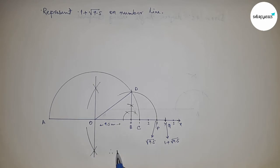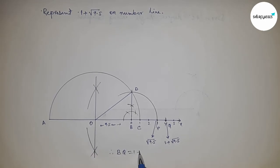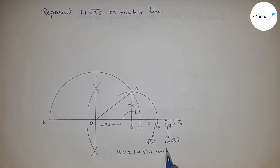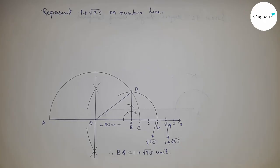Therefore, BQ equals 1 plus root 9.5 units. That's all, thanks for watching. Please subscribe, like, and comment on my video.